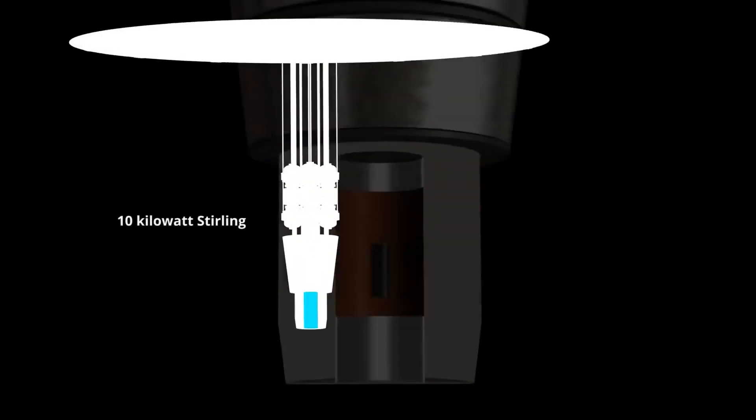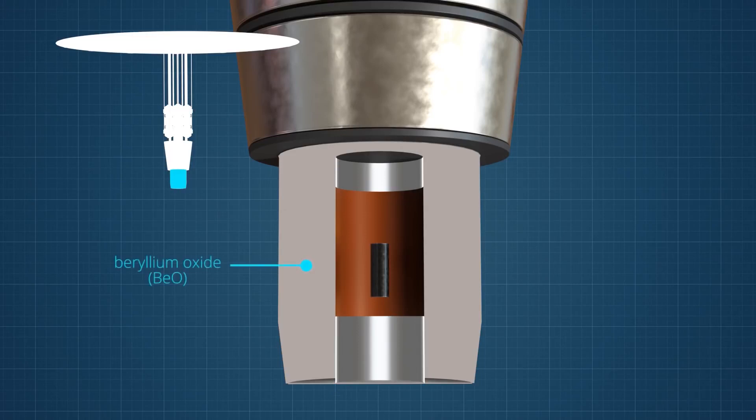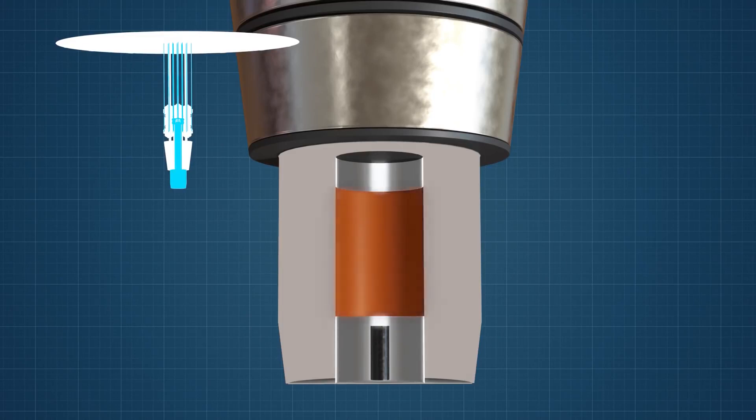The reactor core is a cylinder of enriched uranium that is 6 inches in diameter. A beryllium oxide reflector will surround the uranium core. A single rod of boron carbide is used to turn on the reactor. The reactor uses well-established nuclear physics to self-regulate the fission reactions, and this feature eliminates the need for a complicated control system.